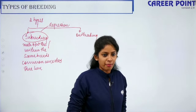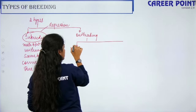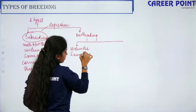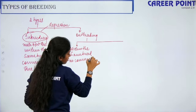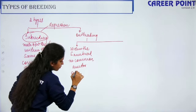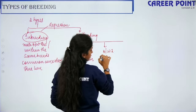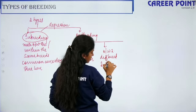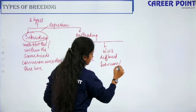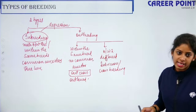Outbreeding can be of three types. First, between the same breed but with no common ancestor — this is like arranged marriage — and this is called an outcross. The next type is between two different breeds, which is intercross or crossbreeding. One example is Hisardale, which was born from Merino rams and Bikaneri ewes.